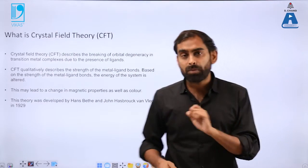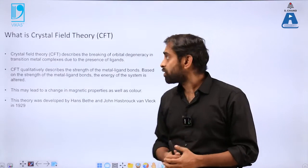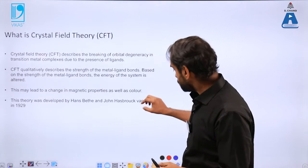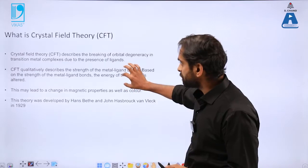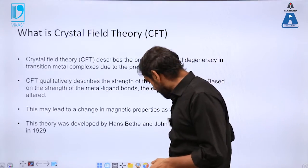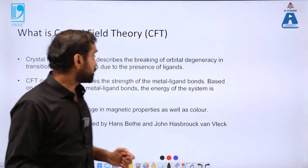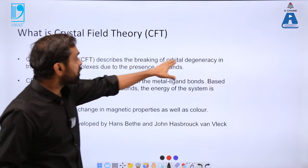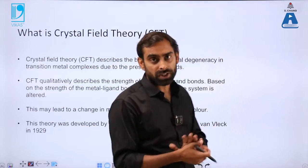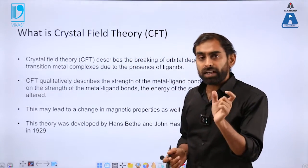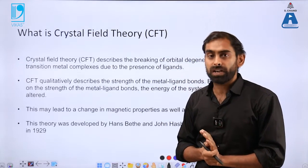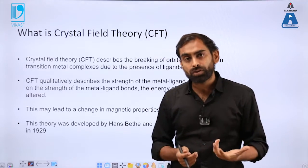Which is observed in most of the d block elements or especially metal ion complexes with the ligands. In more subjective terms, if you want to look at specific points, they have been provided here. It describes the crystal field theory which describes the breaking of orbital degeneracy, which was already degenerate. All the orbitals were identical. That degeneracy is broken down and now 5d orbitals do not remain identical.